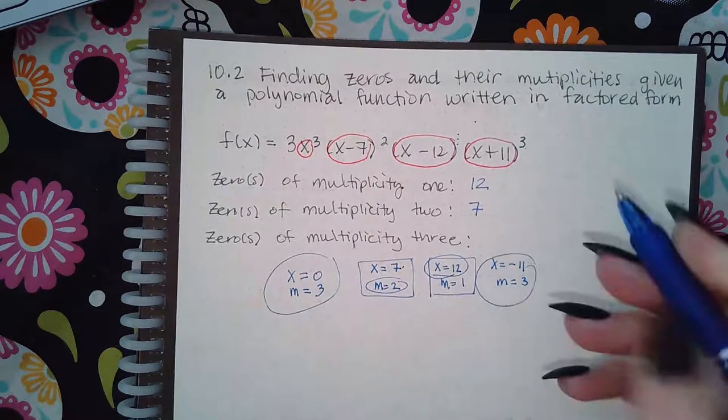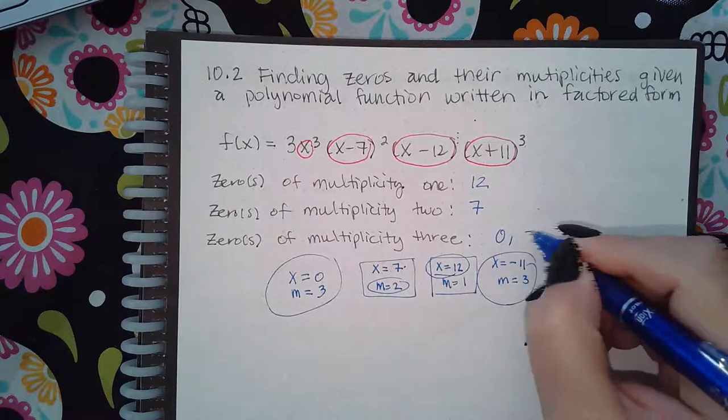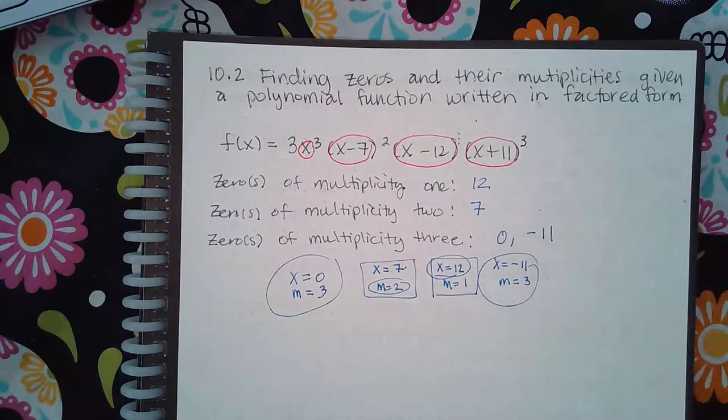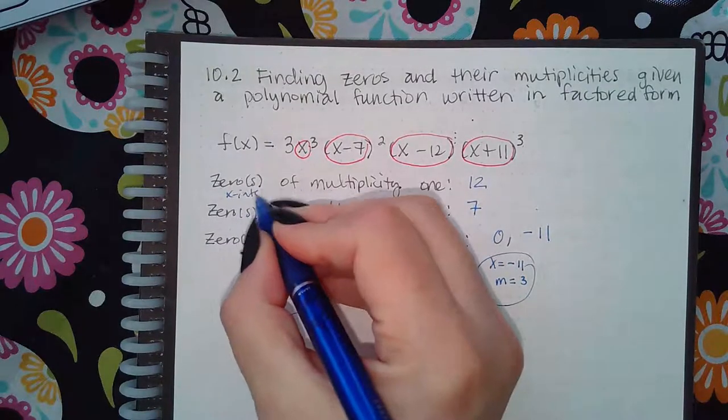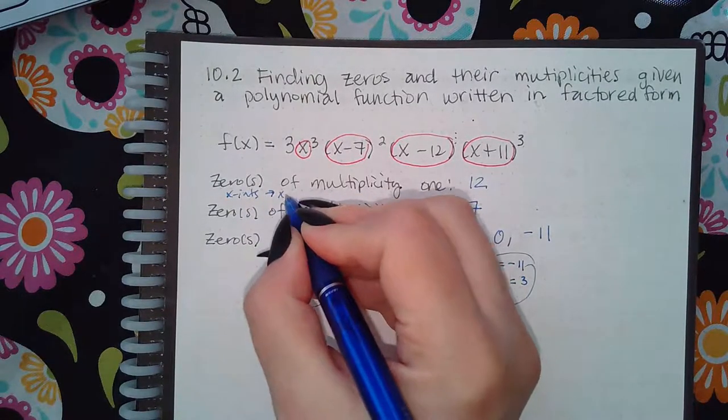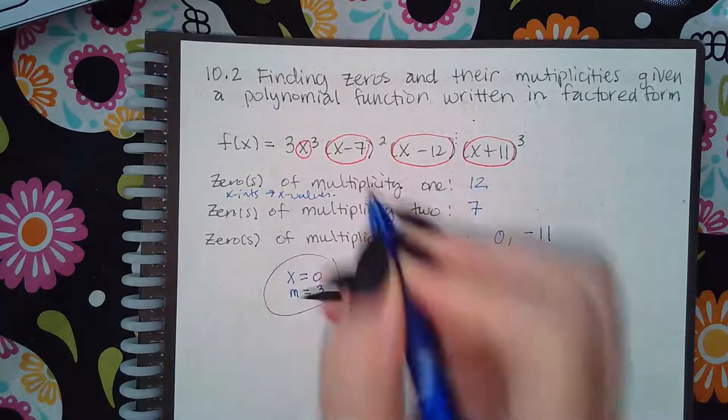And then which zeros have multiplicity of three? Why two of them, and the x values are zero and negative 11. Okay, so when they're asking you for the zeros, they're asking you for those x-intercepts. They want the x values.